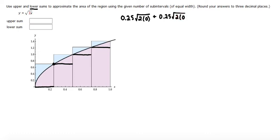And then the next rectangle has a width of 0.25 again. The height would be when the function is equal to 0.5, or when x equals 0.5. So that would be 0.25 as the width times the square root of 2 times 0.5.